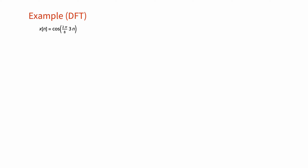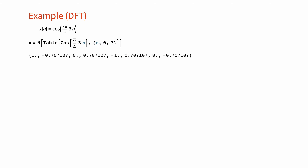As an example, let's use the function Fourier to calculate the Fourier series coefficients of the periodic sequence x[n] given here. Note that x[n] has a period of N equal to 8. First, we obtain a list of samples representing one period of the sequence by evaluating x[n] at n equal to 0, 1, all the way to 7. Then we calculate the discrete time Fourier series coefficients of the cosine sequence x[n] using the function Fourier.